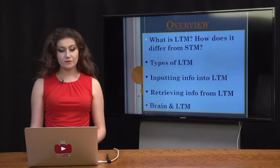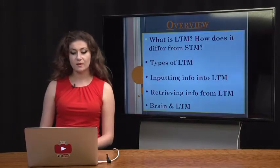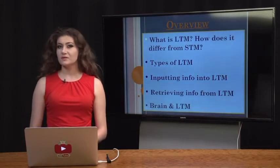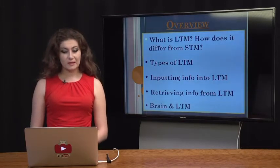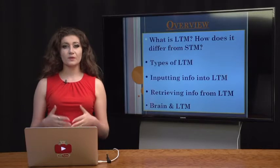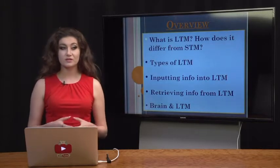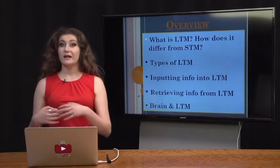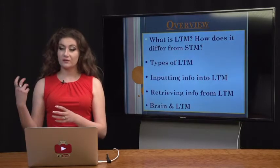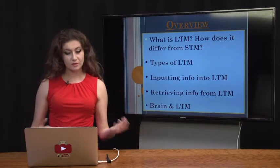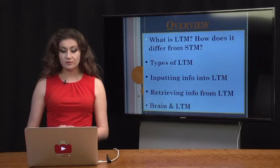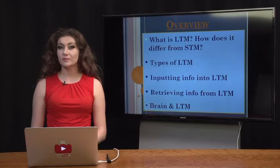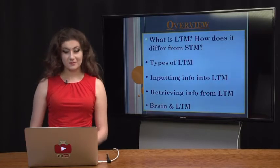As an overview, we're going to discuss how long-term memory differs from short-term memory, the different types of long-term memory that actually exist, the important process of getting information from short-term memory into long-term memory, and then equally important, getting it back from long-term memory to short-term or working memory. Lastly, we'll wrap up by talking about the different parts of the brain responsible for forming long-term memories.